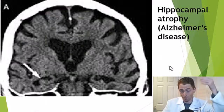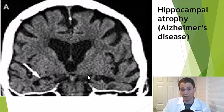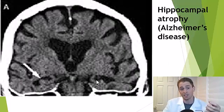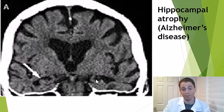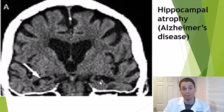Here are coronal slices through the hippocampi — the areas involved in short-term memory formation — and they are significantly shrunken or atrophied in someone with Alzheimer's dementia.